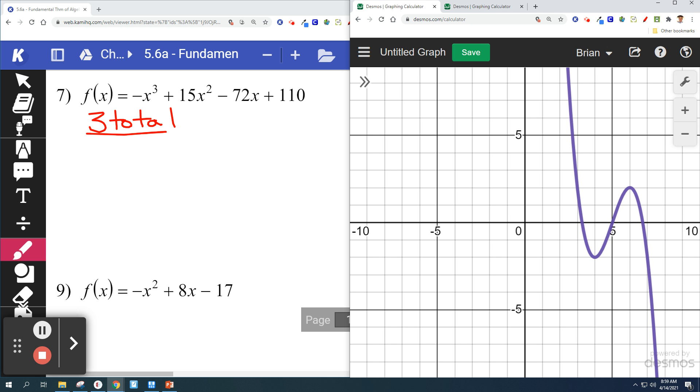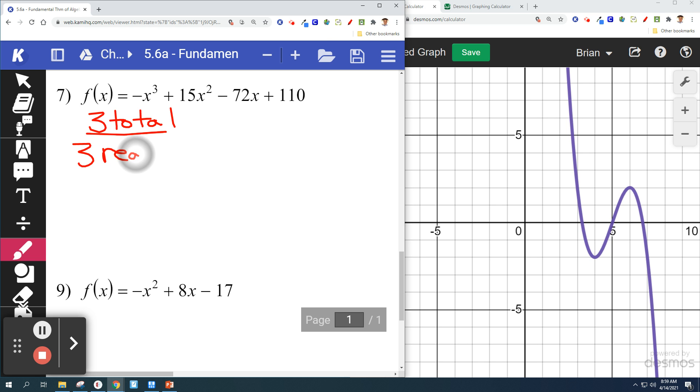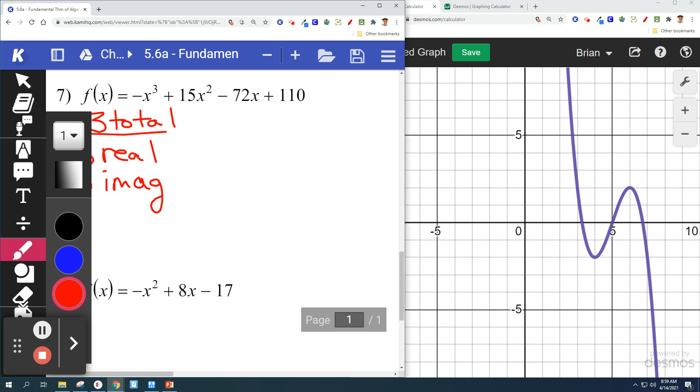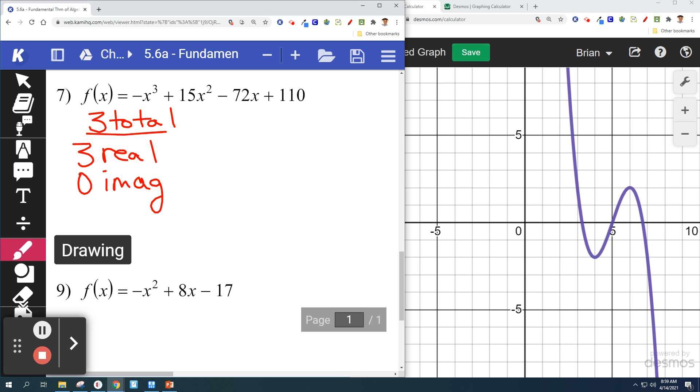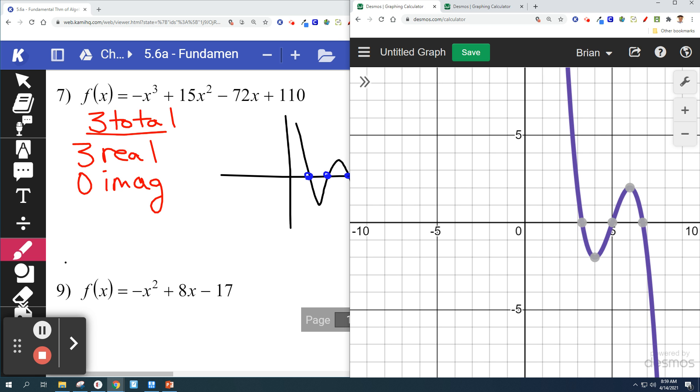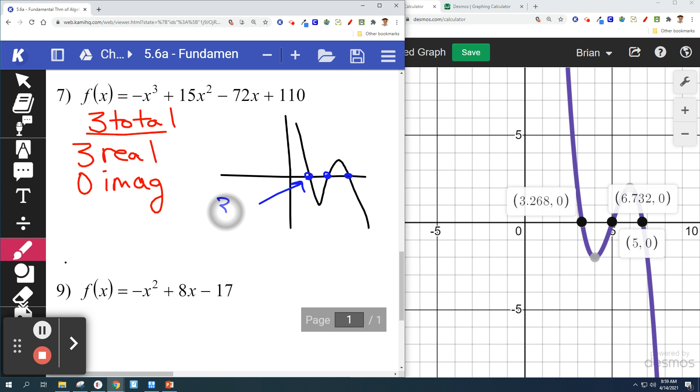Looks like I see three reals. Three x-intercepts. Three real solutions. In this case, there would be zero imaginaries. And this looks like what we're used to. We've solved a lot of equations with real numbers. We haven't solved a lot of them with imaginaries. One, two, three. Three point two, six, eight. This one is five. And this one is six point seven three two.